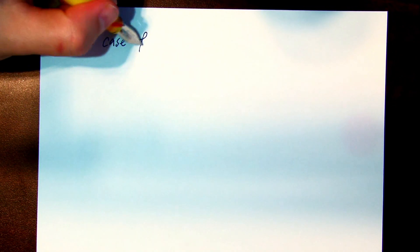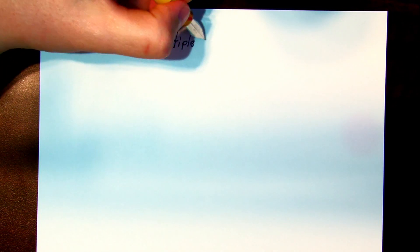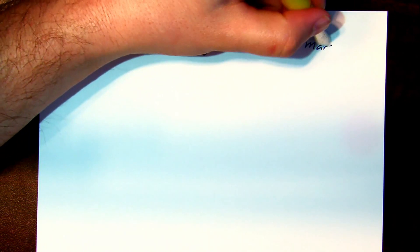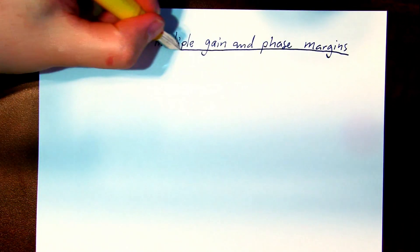When stability margins are introduced in textbooks, usually a loop gain is shown to only have a single gain and phase margin. But really, multiple gain and phase margins can exist.